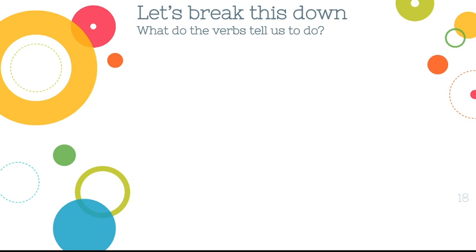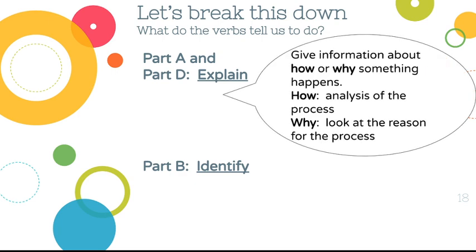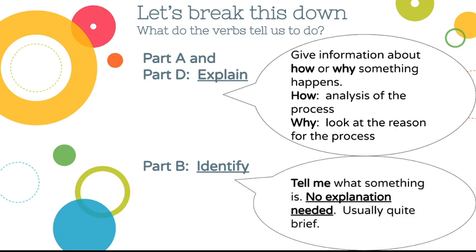Let's break down what the verbs tell us to do. Parts A and D ask us to explain — give information about how or why something is happening. If you're explaining how, analyze the process step by step. If explaining why, give the reason. Part B asks you to identify — just tell me what something is, briefly. Don't waste time writing an explanation when you're only asked to identify.